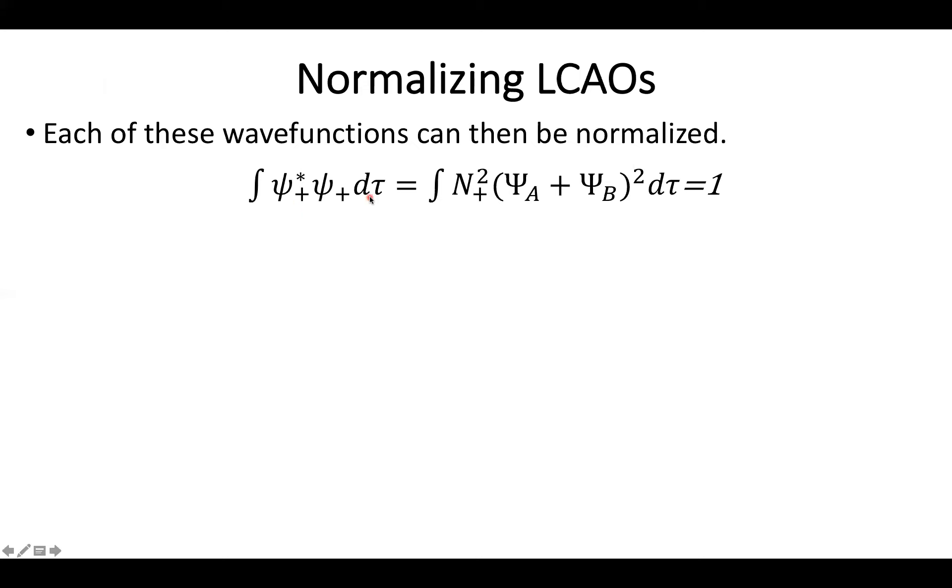So I'll take the wave function, multiply it by its complex conjugate, and then integrate over all space. So when we do this, we can then insert the equational form we already had. So what we end up with is our normalization constant will get squared, and then the actual combined wave function gets squared.